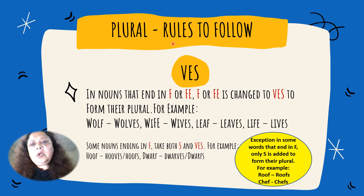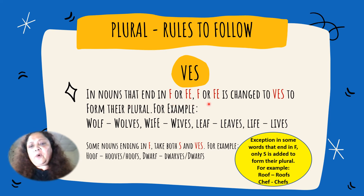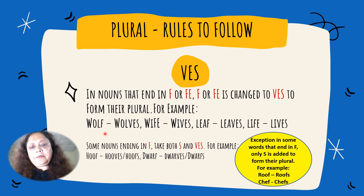Plural rules to follow with VES. In nouns that end in F or FE, the F or FE is changed to VES to form their plural. For example: wolf, wolves; wife, wives; leaf, leaves; life, lives.